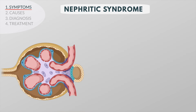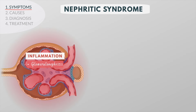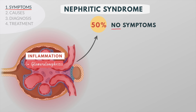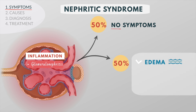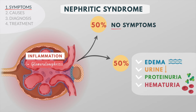In nephritic syndrome, the glomerular injury is manifested as an inflammation of the glomerulus. About half of the people with acute glomerulonephritis have no symptoms. If symptoms do occur, the first to appear are tissue swelling due to fluid retention, low urine volume, and various degrees of proteinuria and hematuria.